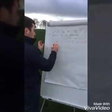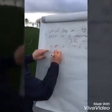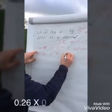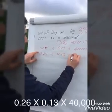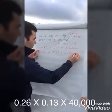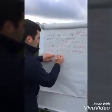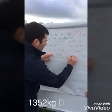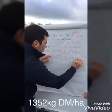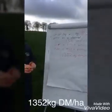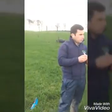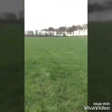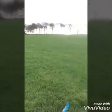So when we multiply it out: 0.26 (the weight of the bag) multiplied by 0.13 (the dry matter percentage as a decimal) multiplied by 40,000, that gives us 1,352 kilos of dry matter per hectare. So in this paddock, there are 1,352 kilos of dry matter per hectare above 4 centimetres.